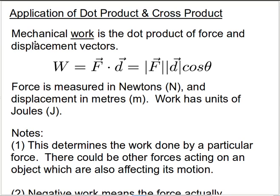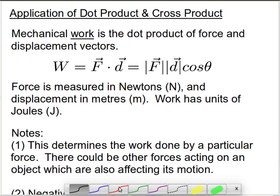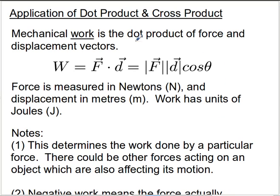The first type of application I'm going to look at is something known as work. Work is, mathematically, the dot product between force and displacement, and those are two vector quantities. So here is the equation that defines work. Work is a scalar quantity, it's just a number, it doesn't have direction itself, so it's appropriate to use dot product for it.